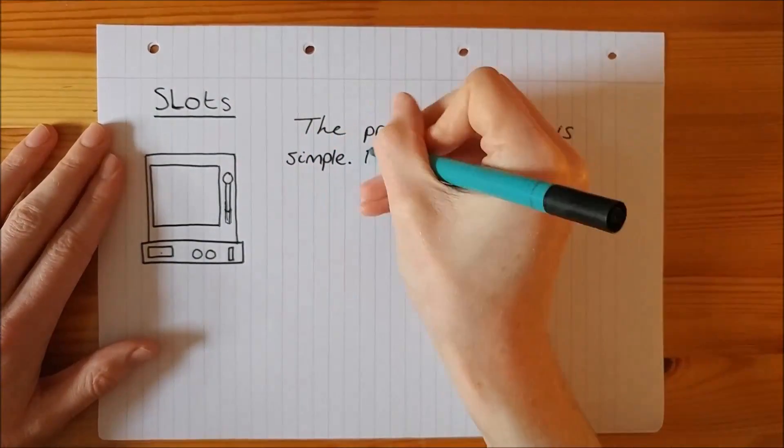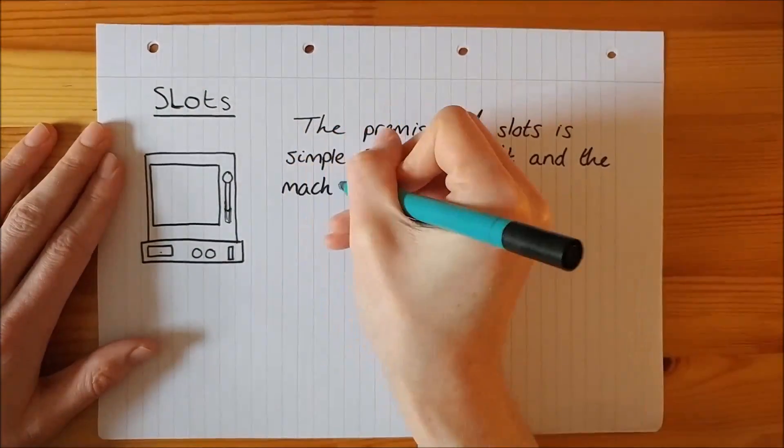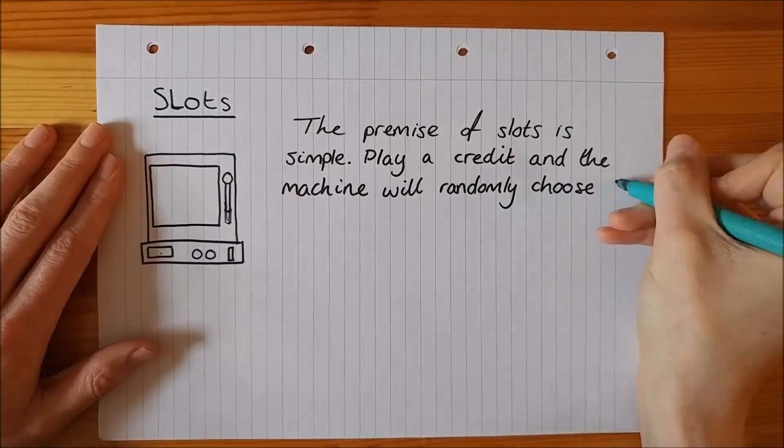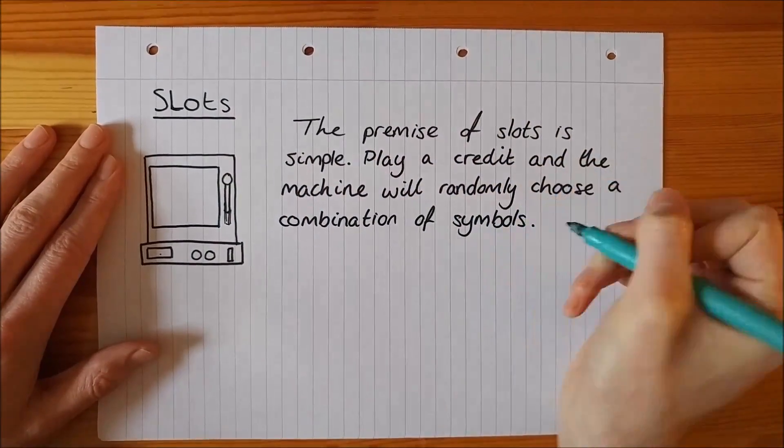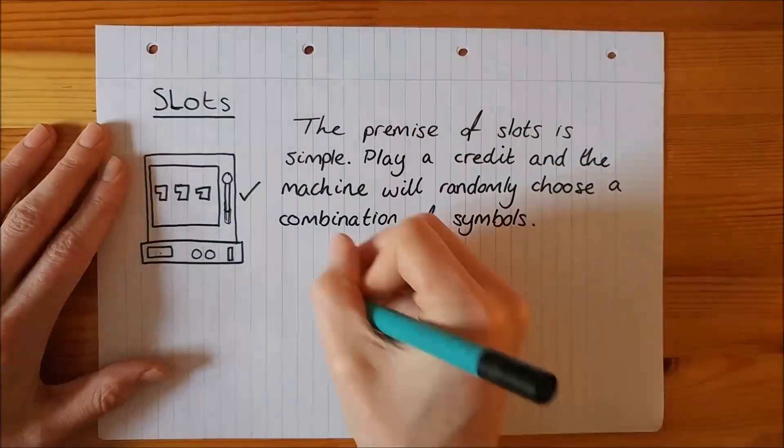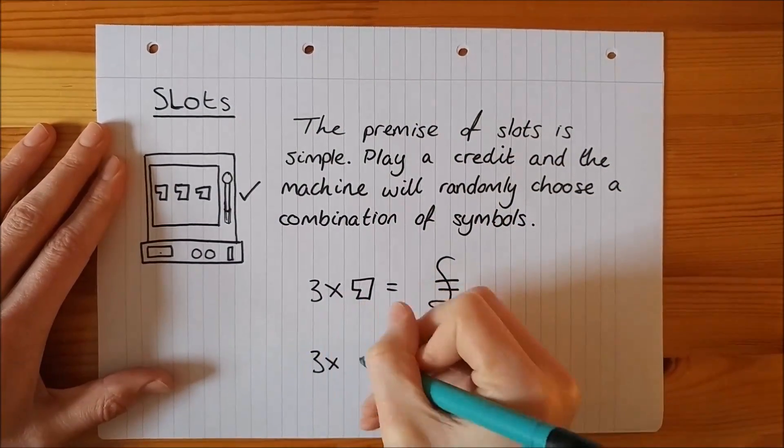The premise of slots is simple. Pay a credit and the machine will randomly choose a combination of symbols. If the symbols match, you get a payout, and the value of the payout depends on the symbols that come up.